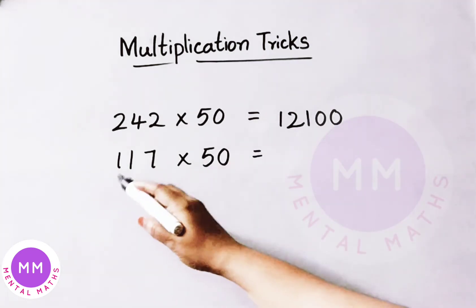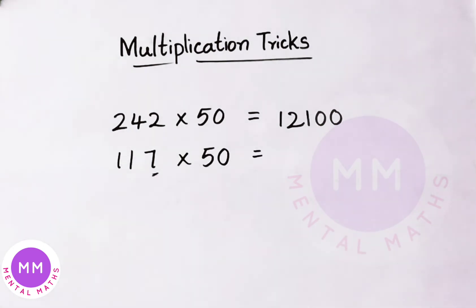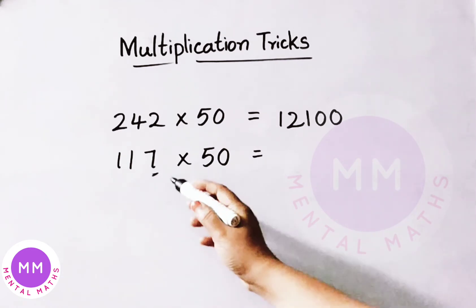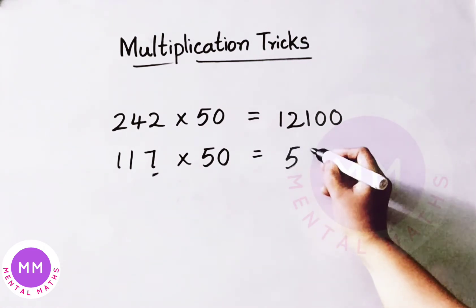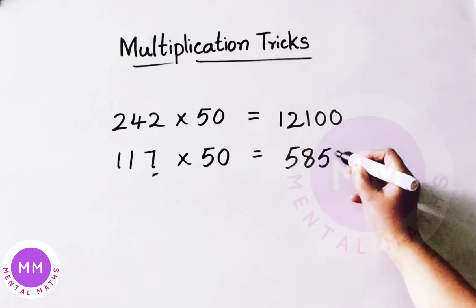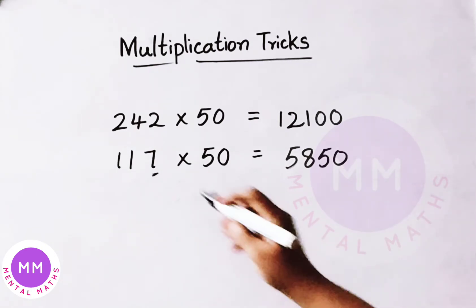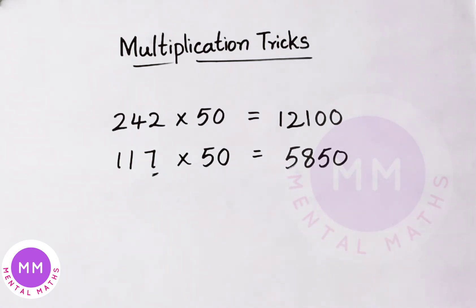Next example: 117 multiplied by 50. Here we are having 7, that means it is an odd number. So how we shall solve this? Take the previous number 116. Half of 116 is 58. Write down 58, then at last write down 50 and you get the result. So 117 multiplied by 50, the answer is 5850.